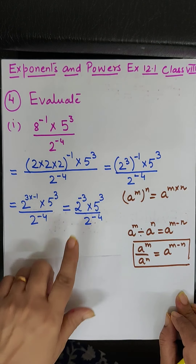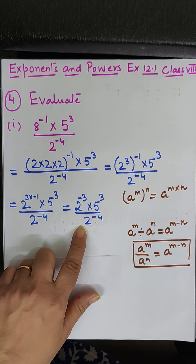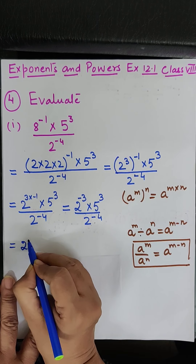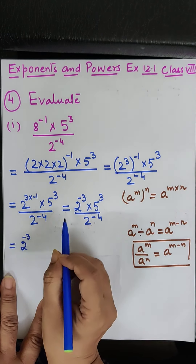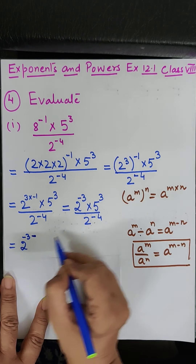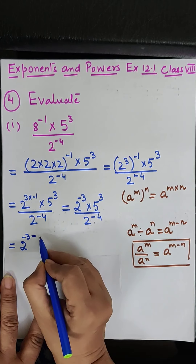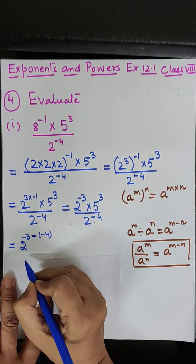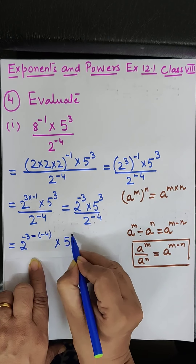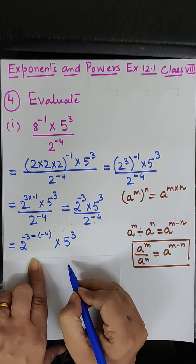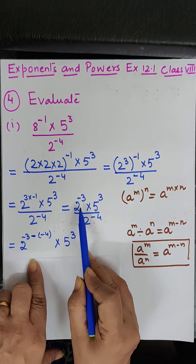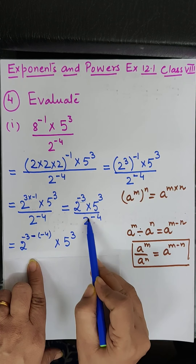We will use the division law: a to the power m upon a to the power n equals a to the power m minus n. So the next step gives us 2 to the power minus 3, minus sign, and then minus 4, into 5 to the power 3. Bases are the same, division in between, so powers are subtracted.